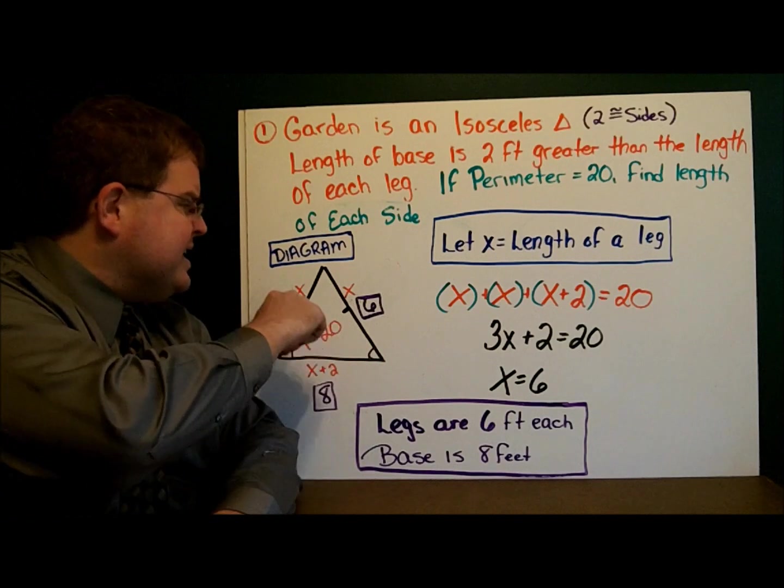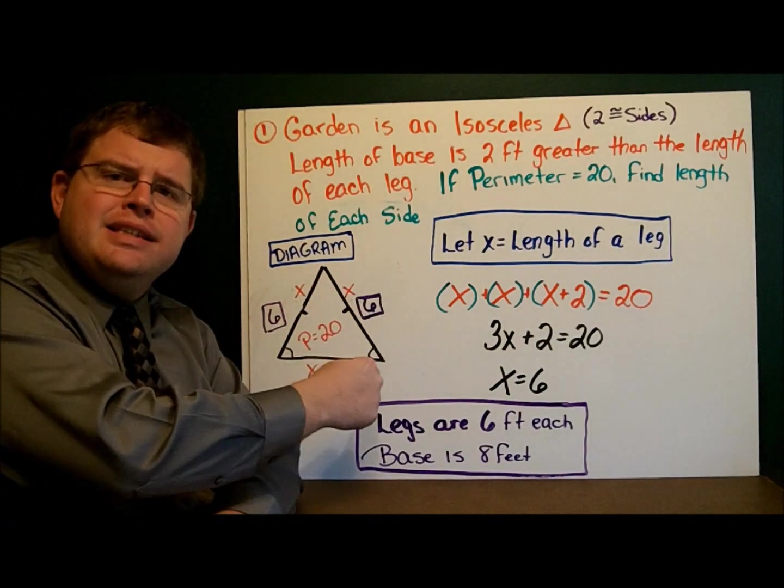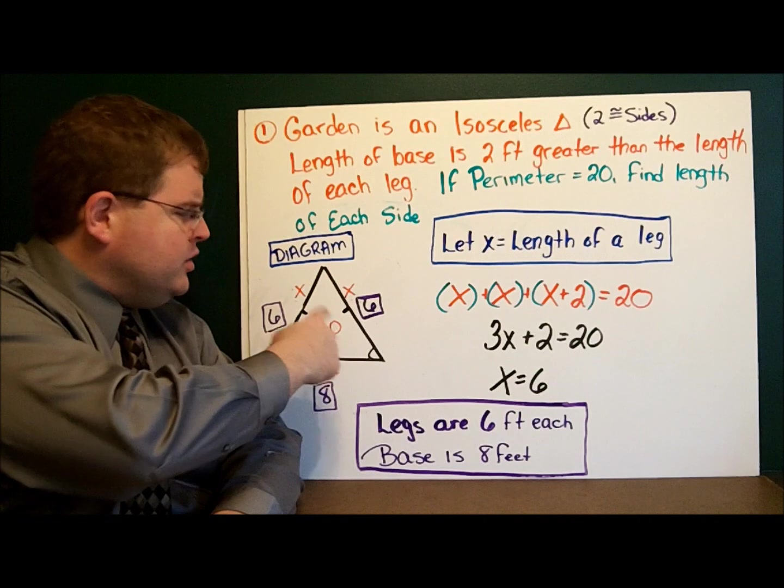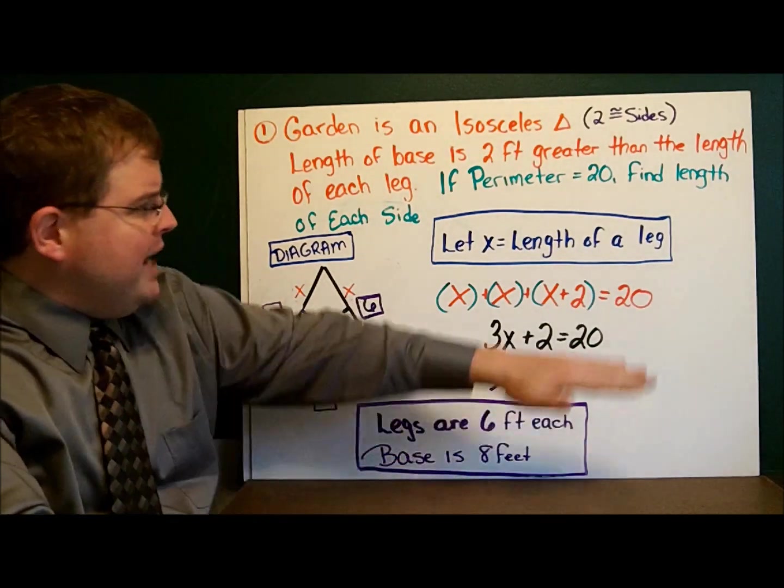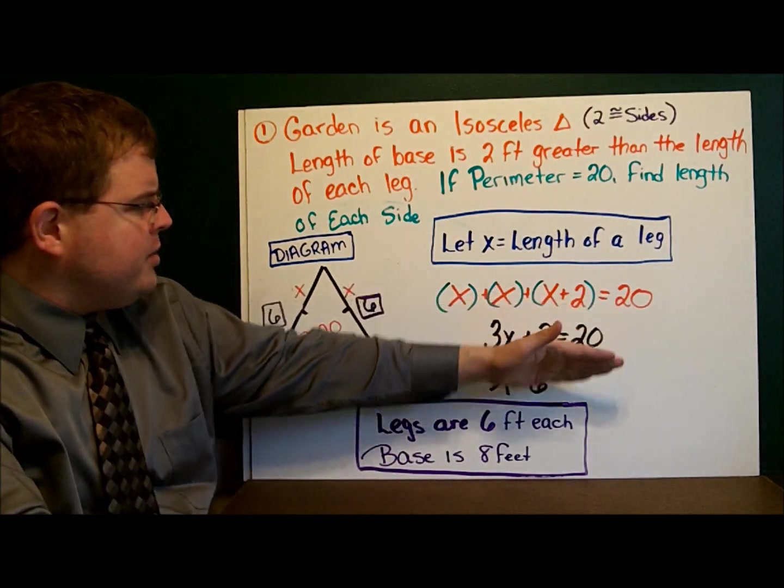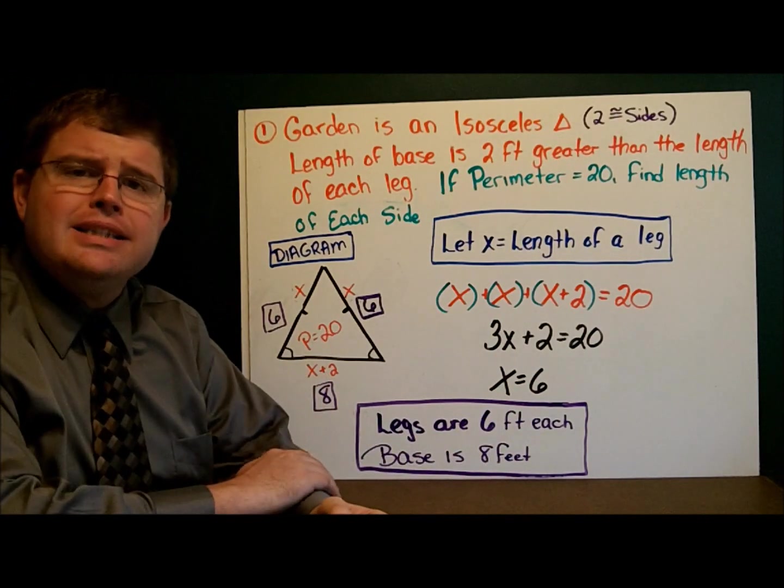Now remember to find the perimeter, I add up all three sides. x plus x plus x plus 2 equals 20. Now I have my equation, I go through and solve it, and I end up with x equals 6.